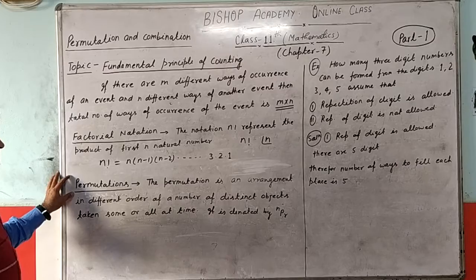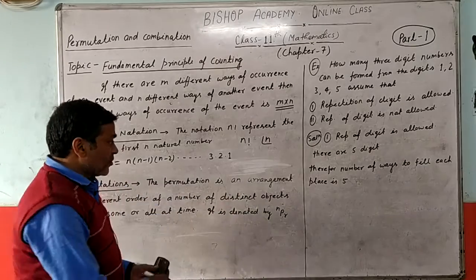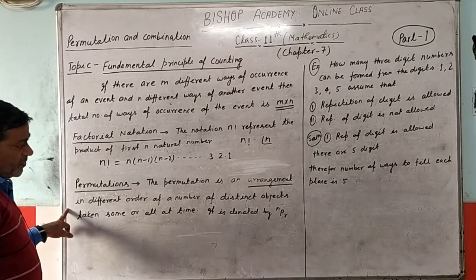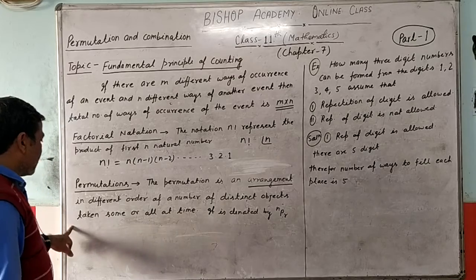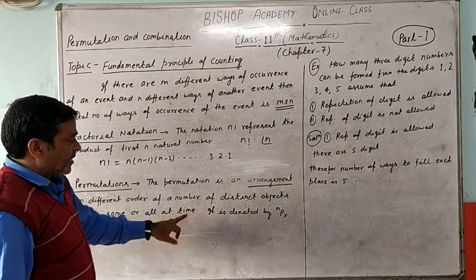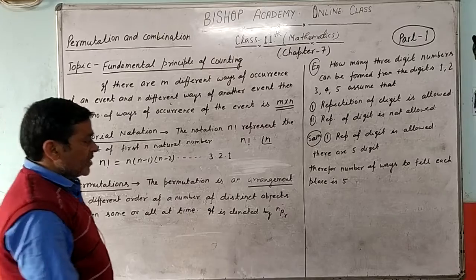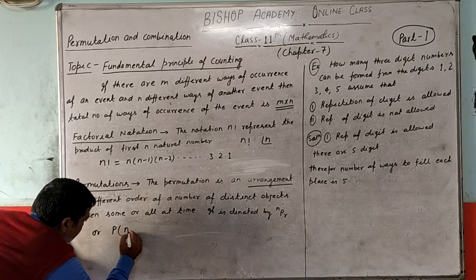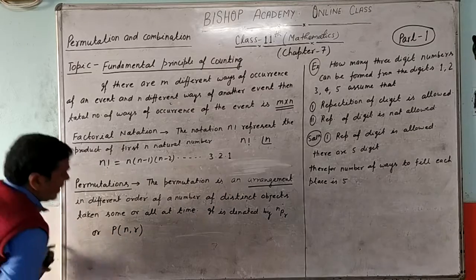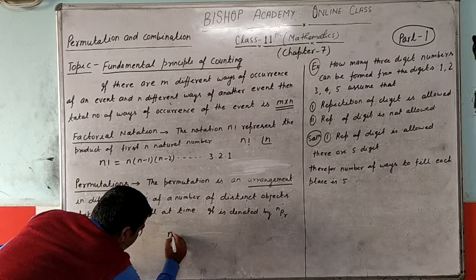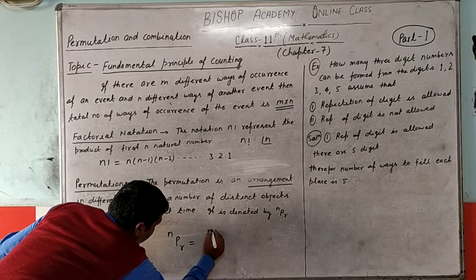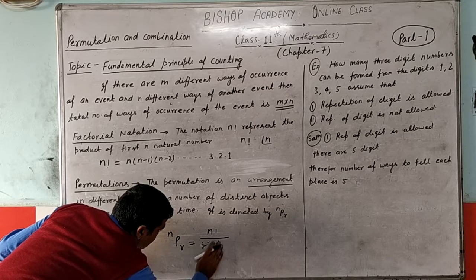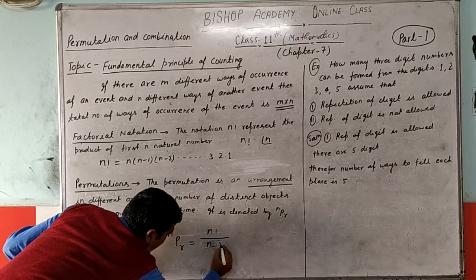The permutation is the arrangement — permutation means arrangement — of a number of distinct objects taken in different orders, some or all at a time. It is denoted by NPR, and defined by NPR equal to N factorial upon N minus R factorial.